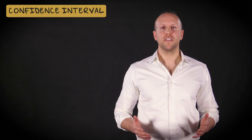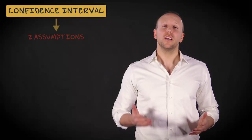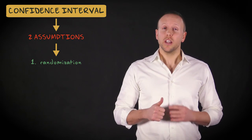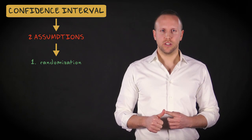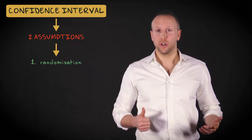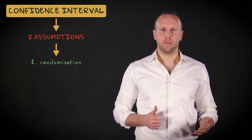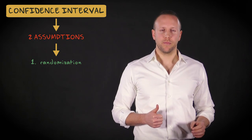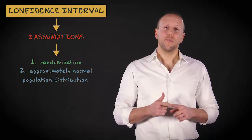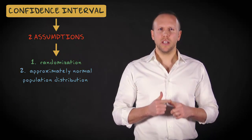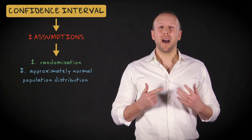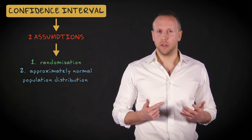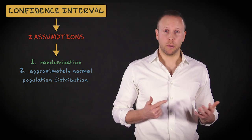To compute a confidence interval for a population mean, two assumptions need to be satisfied. First, your data should be obtained by randomization — in other words, the sample should be a random sample. Otherwise, your findings will not be valid. Second, your population should be approximately normally distributed. This might seem problematic, because many variables are not normally distributed in the population.